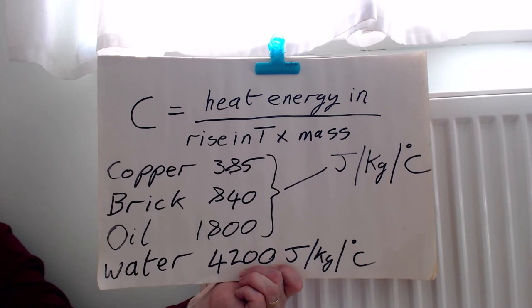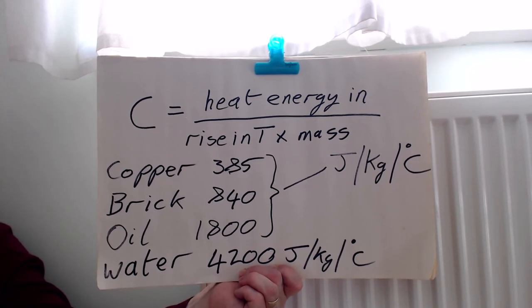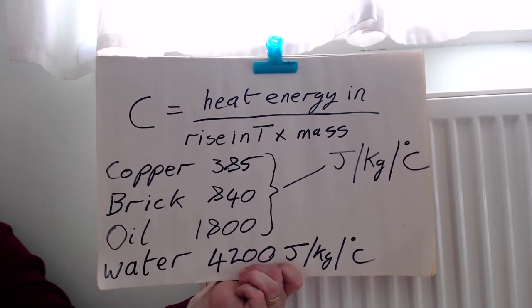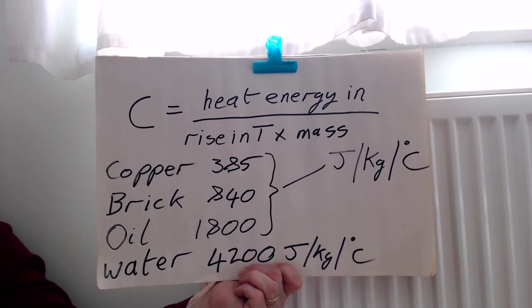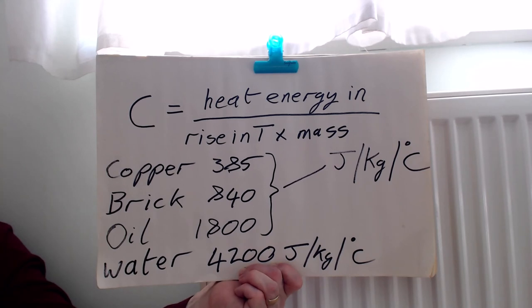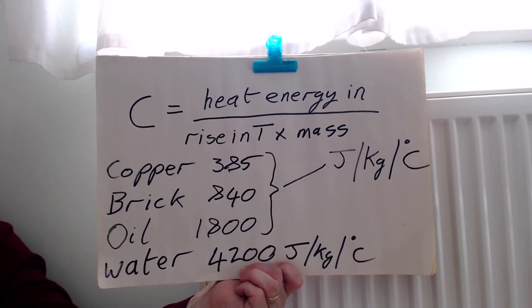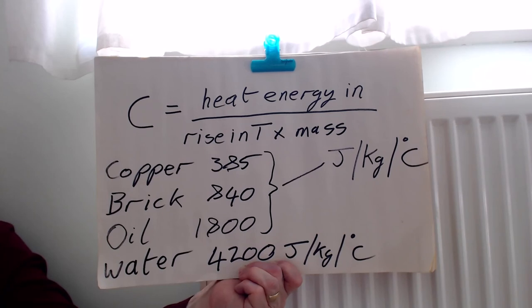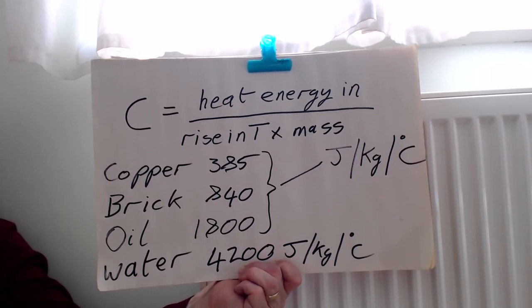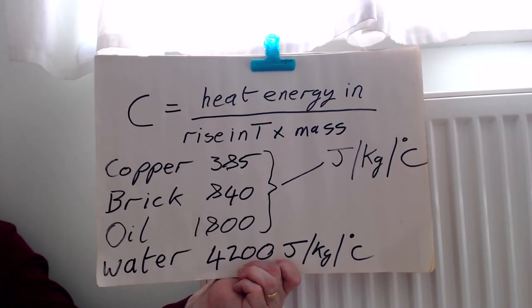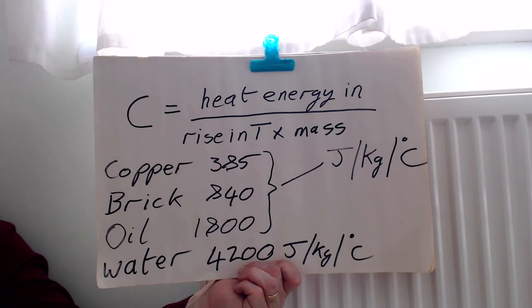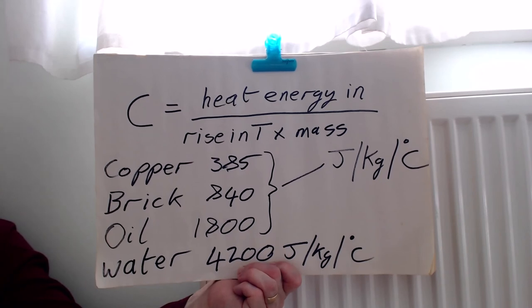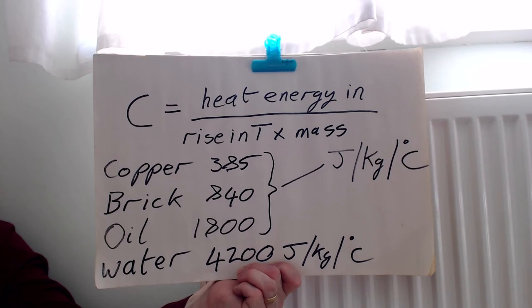For every degree it cools down, it's letting out that same amount of energy. So it's letting out 4200 joules for every degree centigrade that it cools down. In other words, there's a lot of energy that it can be pumping out into the rooms in our house. And when it returns through the pump to the boiler, it's still at a fairly elevated temperature. So all the radiators in our house are going to be within a few degrees of that 50 degree centigrade because they've got a lot of heat capacity available in the water flowing through them. And that's what makes it such a great system for radiators.